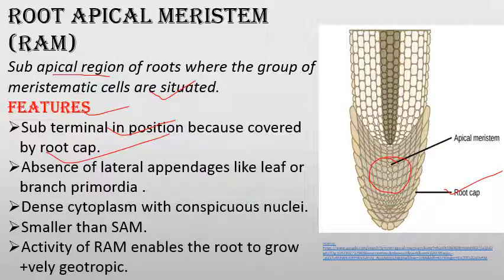The root apical meristem is similar to the shoot apical meristem, but it does not have lateral appendages like leaf primordia. Leaf primordia are not present in the case of root apical meristem.